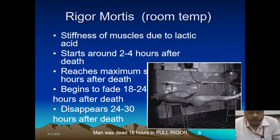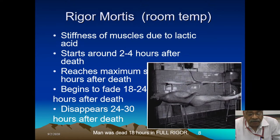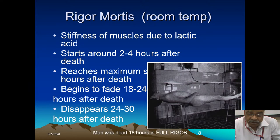Rigor mortis is stiffness of muscles due to lactic acid and exhaustion of ATP. In the muscles, actin and myosin combination is present, and ATP is essentially required to maintain muscle function. When the ATP level goes down by 15%, the body becomes stiff. An example is a body placed on two stools without bending — it is very straight without any support to the back, showing fully formed rigor mortis.